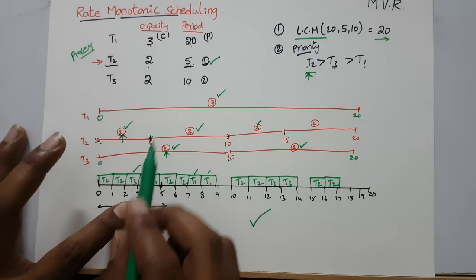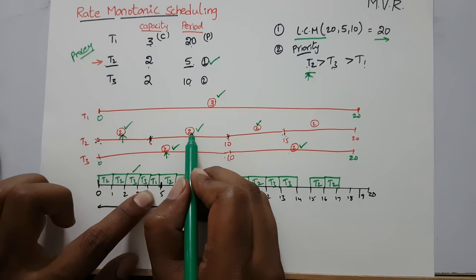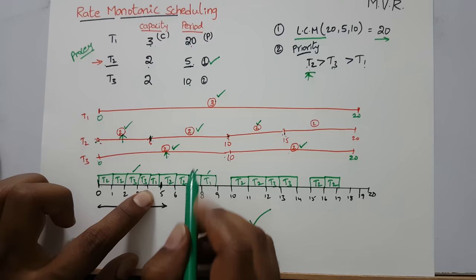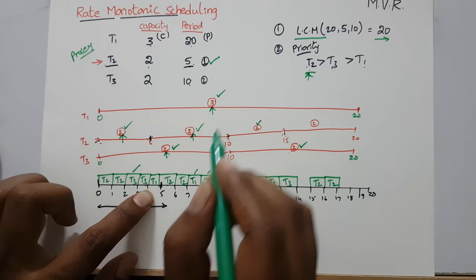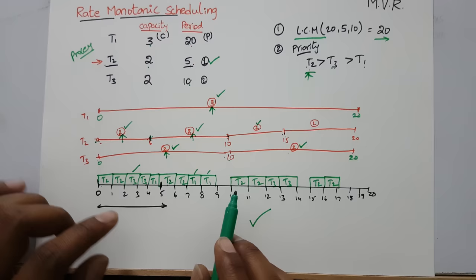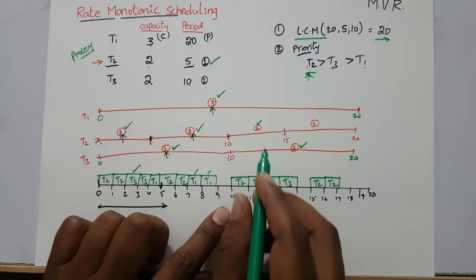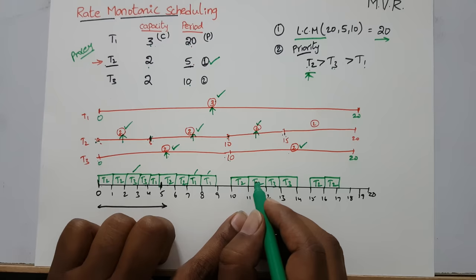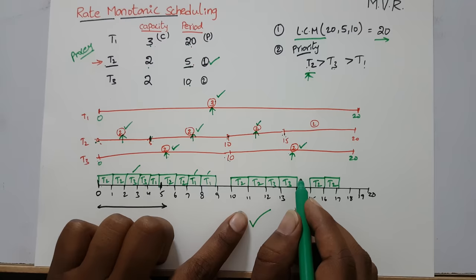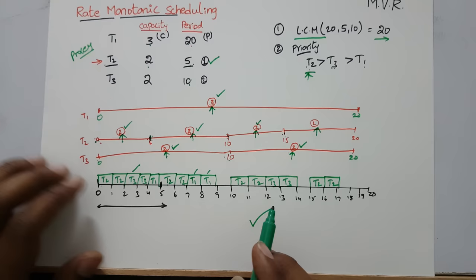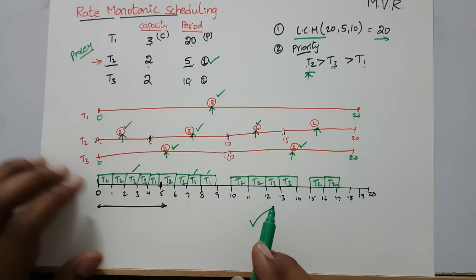T1 completes one portion, but at time 5, T2 has highest priority so T1 is preempted and T2 executes 2 units. Then T1 resumes and completes all 3 units, exiting the schedule. From 9 to 10 no scheduling takes place. At time 10, T2 participates and completes 2 units; at time 12, T3 comes and completes its 2 units. From 14 to 15 there is nothing to schedule; from 15 to 17 T2 executes its final 2 units. The entire schedule must follow priority order systematically — this is Rate Monotonic Scheduling.